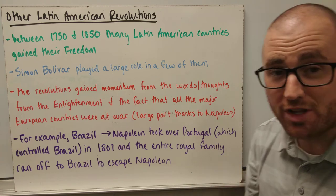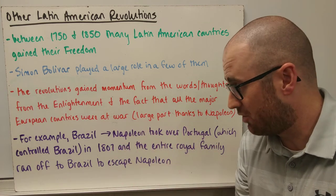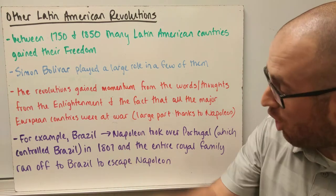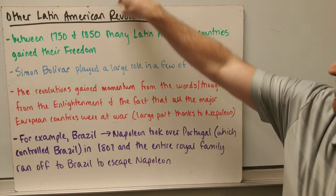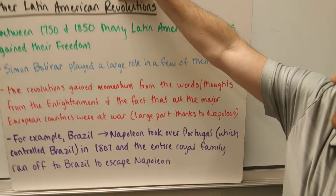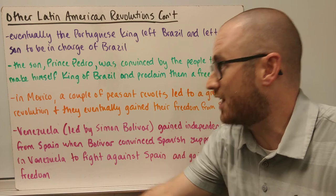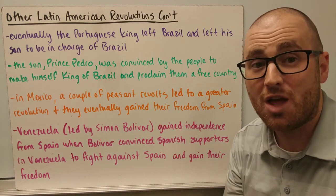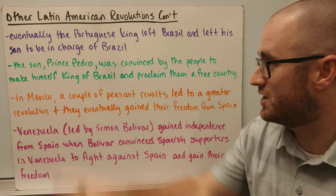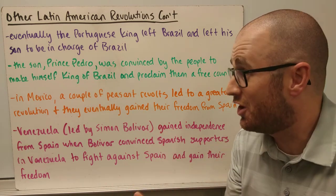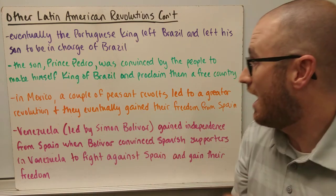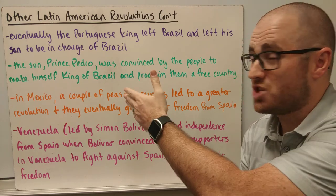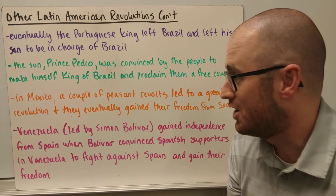For example, in Brazil: Napoleon took over Portugal, which controlled Brazil. When Napoleon took over, the Portuguese king and his family fled all the way to Brazil to escape. Later, Portugal asked the king to return, so he went back but left his son, Prince Pedro, in charge of Brazil. The Brazilian people then convinced Prince Pedro to make himself king of Brazil, and they set up their own independent country as a constitutional monarchy — a revolution with very little bloodshed.